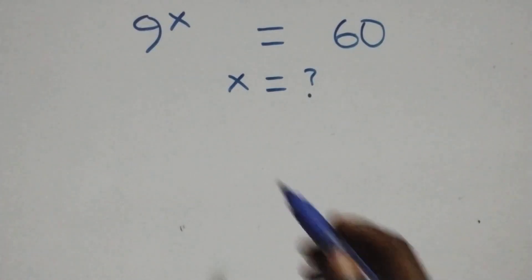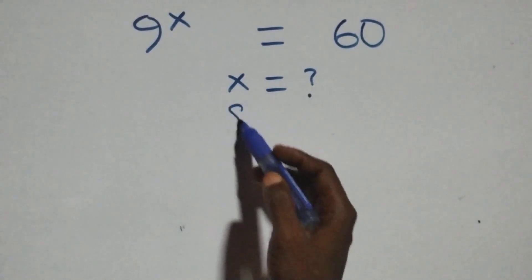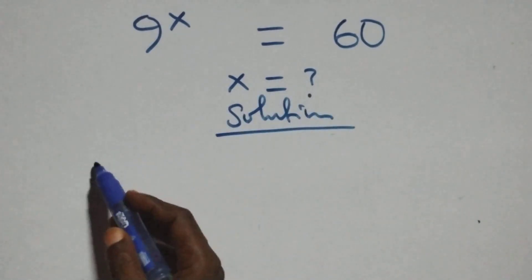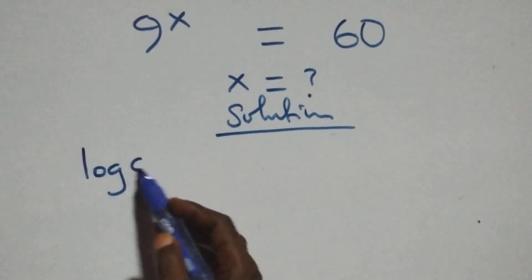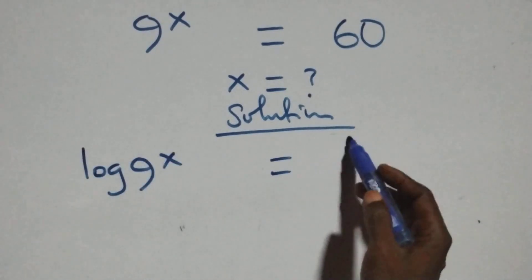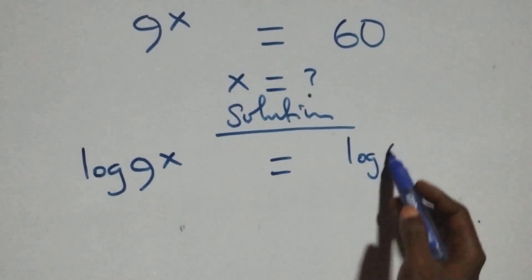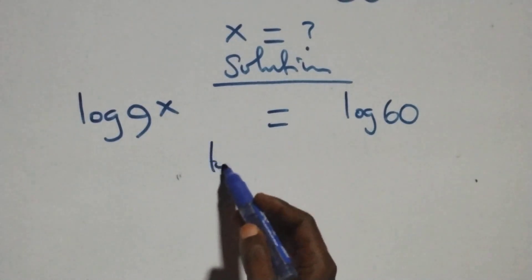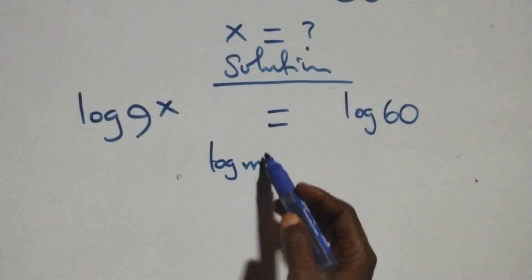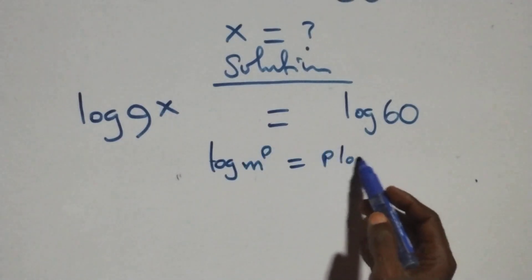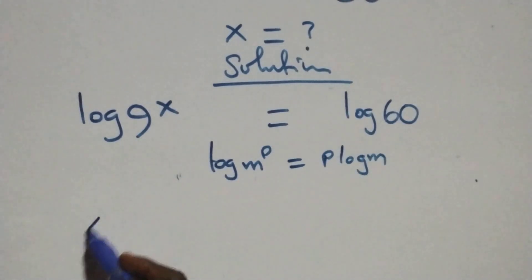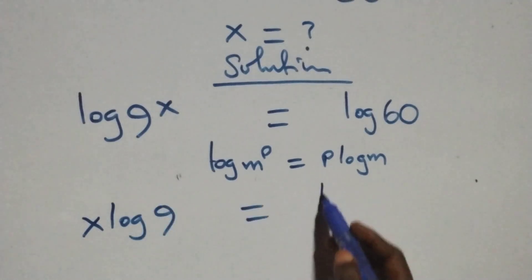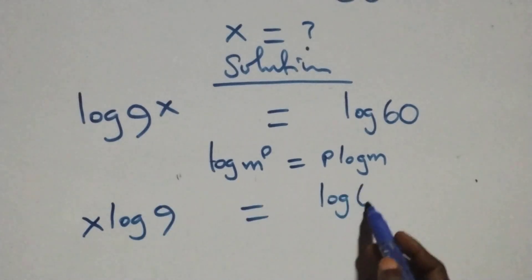Hello, you are welcome. How to solve this nice exponential equation. We take the log on both sides: log 9 raised to power x equals log 60. We apply the power rule of logarithms — when we have log m raised to power p, this is the same as p times log m. So this becomes x times log 9 equals log 60.